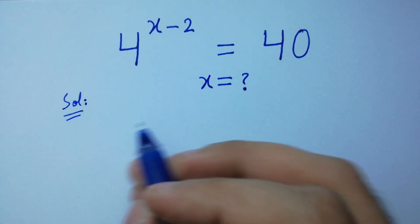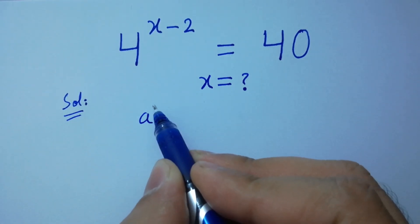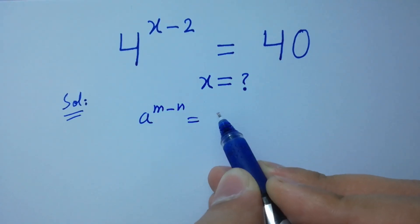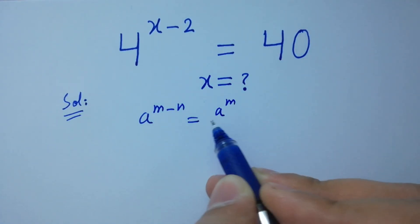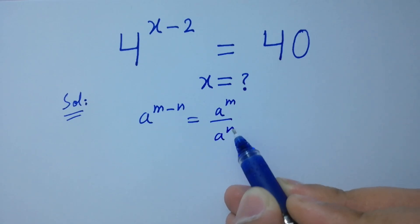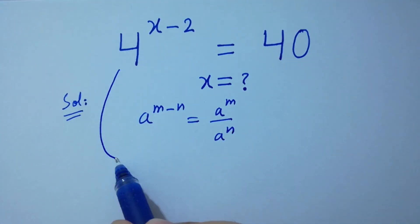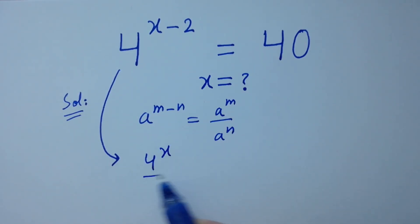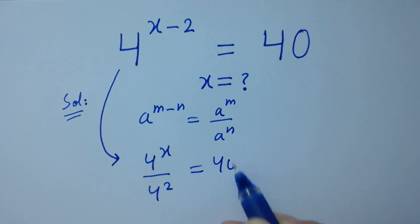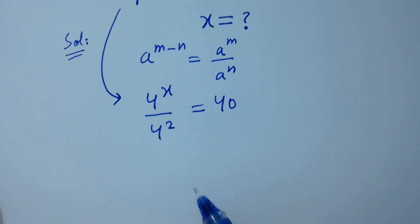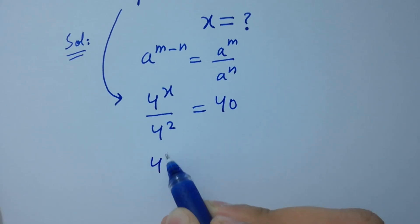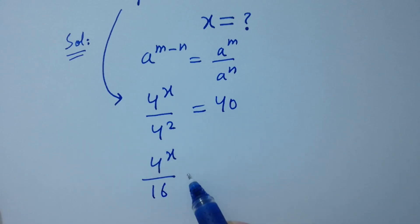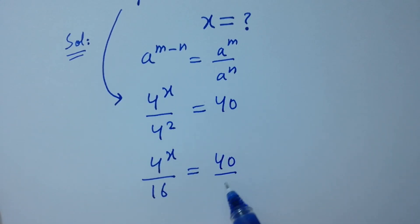As we know, a to the power m minus n equals a to the power m over a to the power n. Applying this rule, we get 4 to the power x over 4 to the power 2 equals 40, which is the same as 4 to the power x over 16 equals 40.